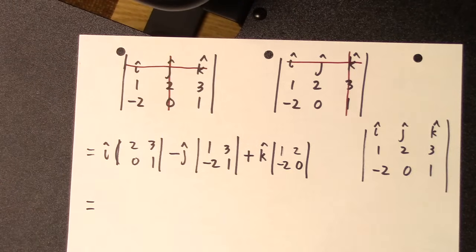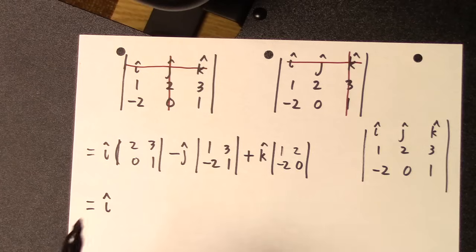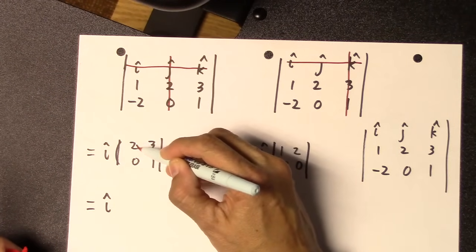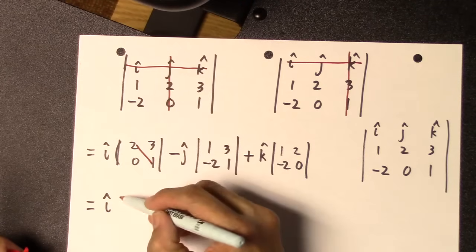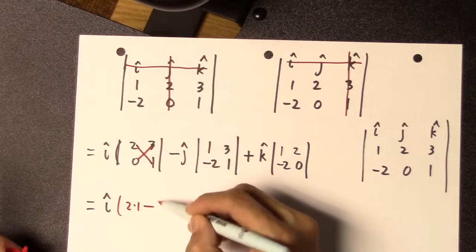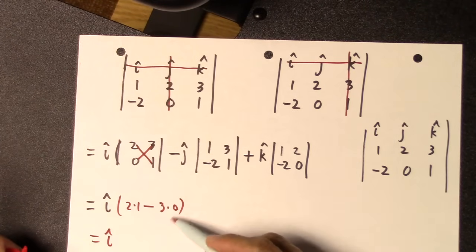To evaluate what you just wrote, let's start with the i hat. You have to multiply the diagonals, 2 times 1, so that'll be this, minus 3 times 0. And altogether, that's going to give you 2.